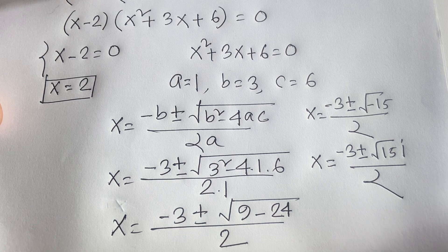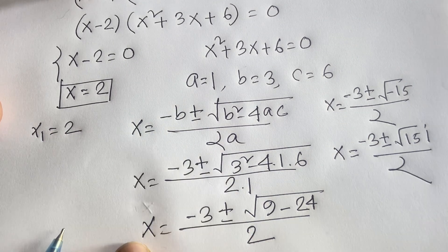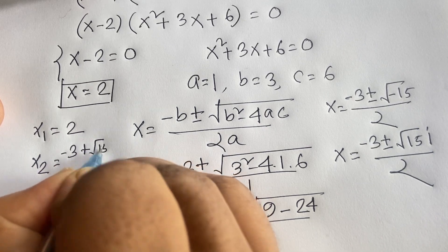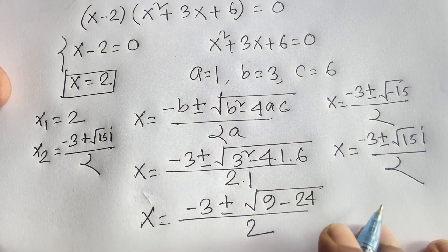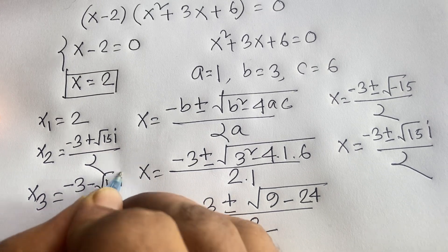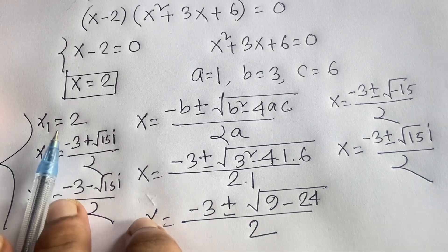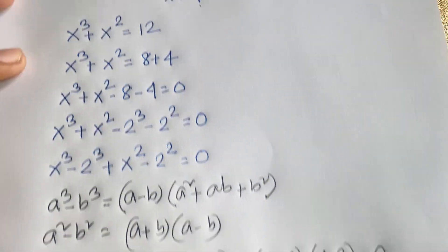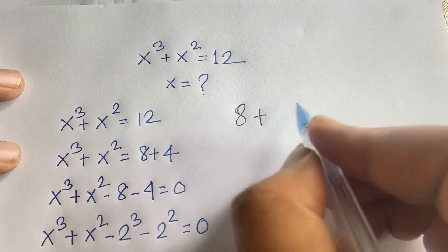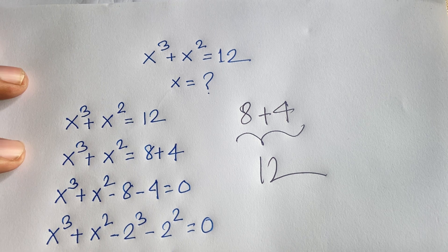Using i for the imaginary unit, the complex roots are x equals minus 3 plus or minus square root of 15 times i, all over 2. So our three solutions are: x₁ equals 2, and x₂ equals minus 3 plus square root of 15 i over 2. Let's verify: x equals 2, so 2 cubed plus 2 squared equals 8 plus 4 equals 12. Thank you all — if you enjoyed this video please subscribe to my channel. Goodbye, take care!